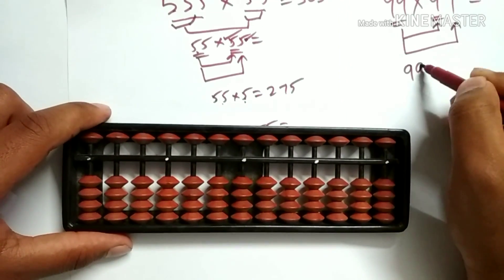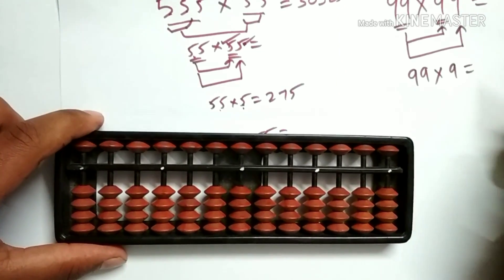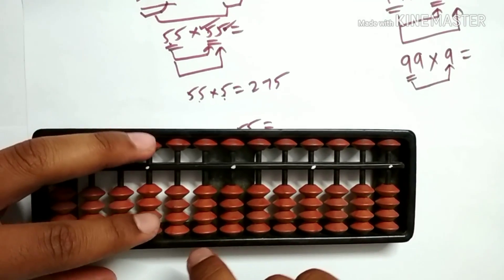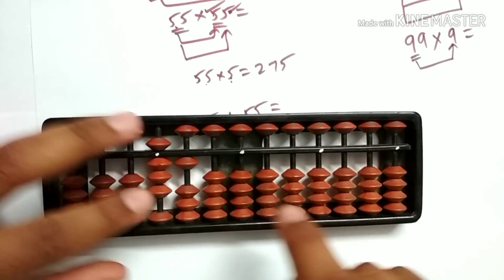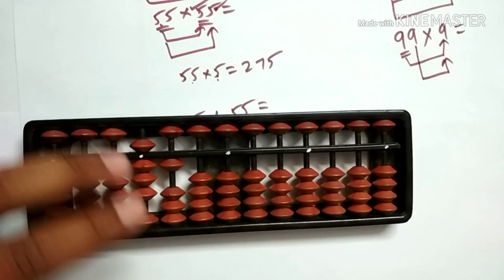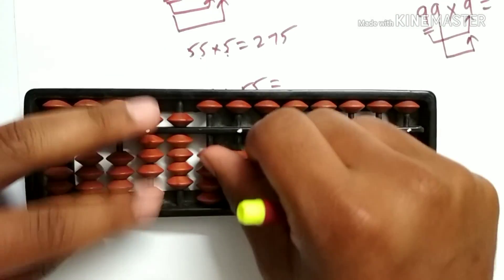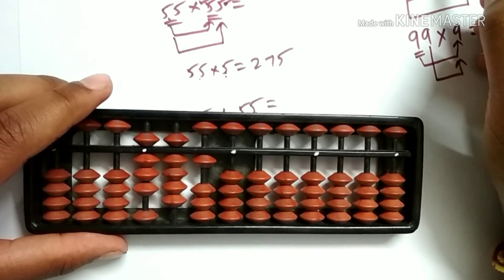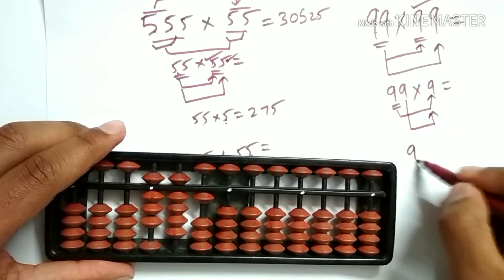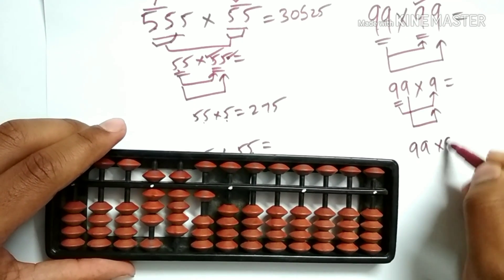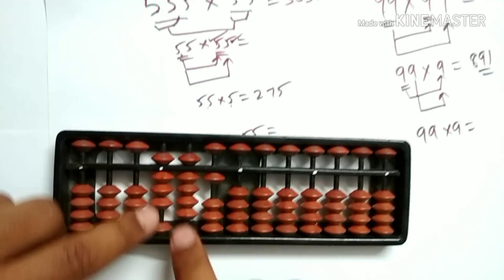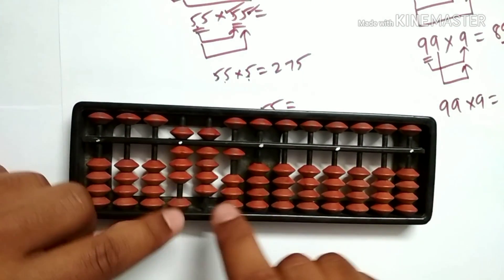Let's do the first part — 99 into 9. This is 9 into 9 is 81. Start placing from the 1000th place, and again 9 into 9 is 81. Let's do the other part — 99 into 9 again. The answer is 891. Let's add 891 from the 100th place.